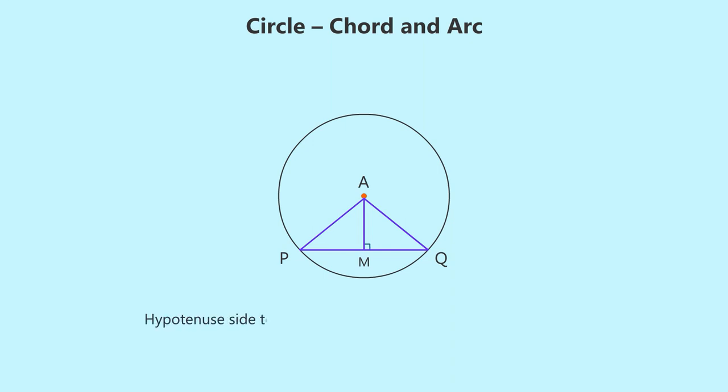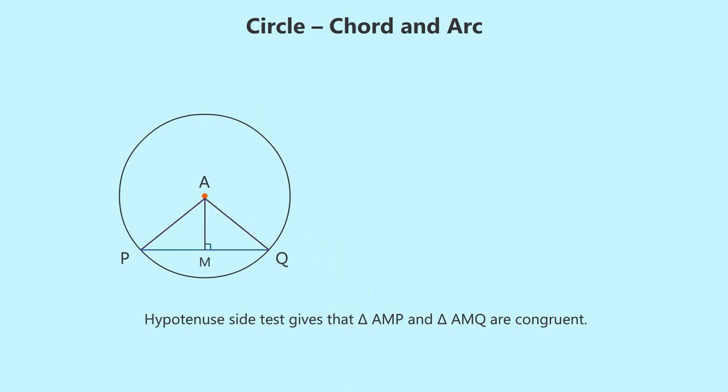So the hypotenuse-side test gives that triangle AMP and triangle AMQ are congruent, and hence any pair of corresponding sides will have the same length. So length of PM equals length QM, that is, M is the midpoint of chord PQ. Really nice, right?